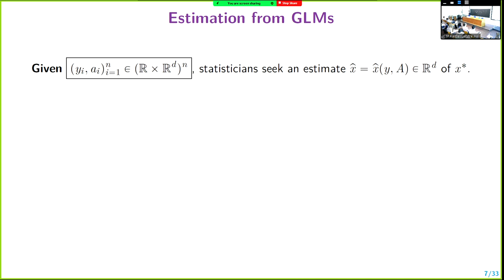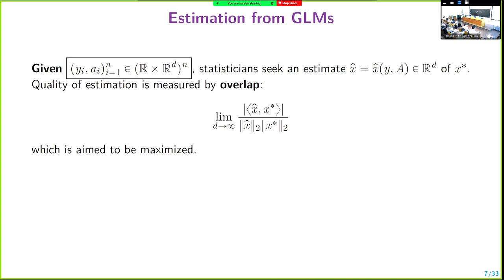Now the problem is the following. Given that model which generates those y_i's and also given the covariate vectors used in the GLM, I want to estimate x star using some estimator x-hat. The quality of the estimation is measured by this overlap, namely the absolute value of the cosine of the angle between x star and x-hat. I want this to be as large as possible. If it's one, then they are exactly aligned. If it's zero, then they're orthogonal. You can also think of this as, up to scaling or additive factors, it's basically the same as the minimum mean square error.